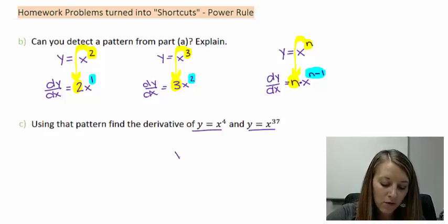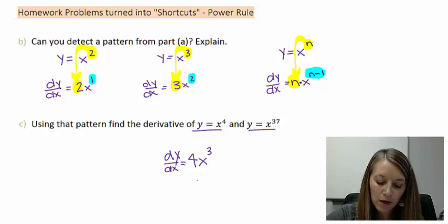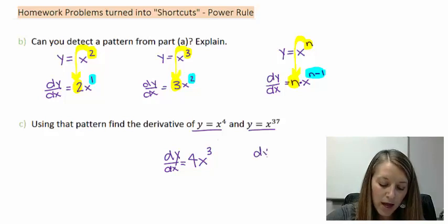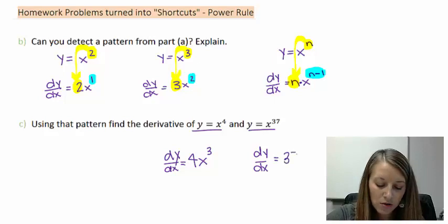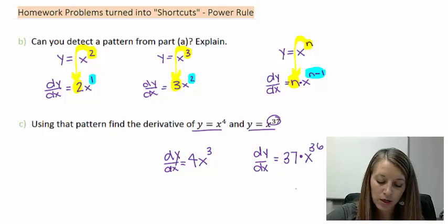So, if y equals x to the fourth, our dy dx is bring our four down, x, and we subtract one from our exponent. So, our derivative here is 4x to the third, and so likewise, our derivative of y equals x to the 37. We take our 37, bring it as a coefficient in front, we multiply it by x, and then we subtract one from our original power. So, if we have 37, if we subtract one, it becomes 36.